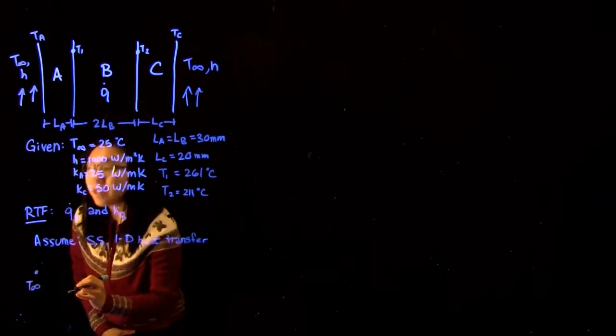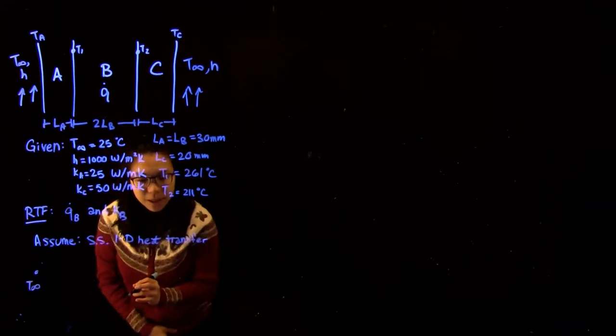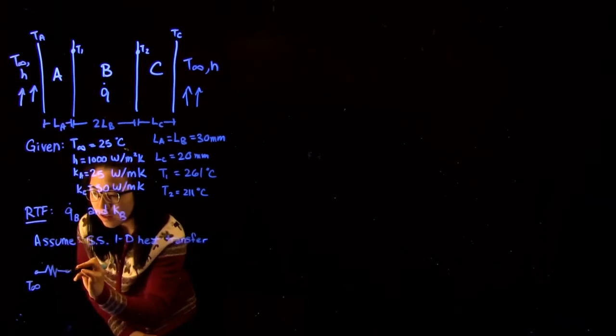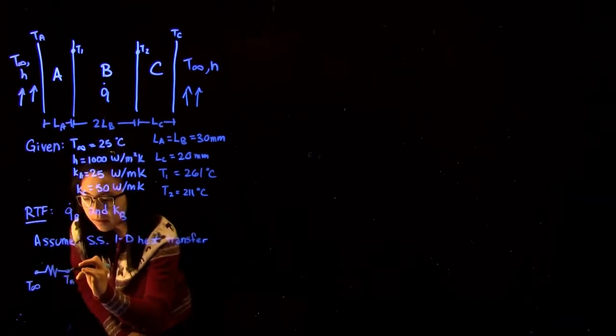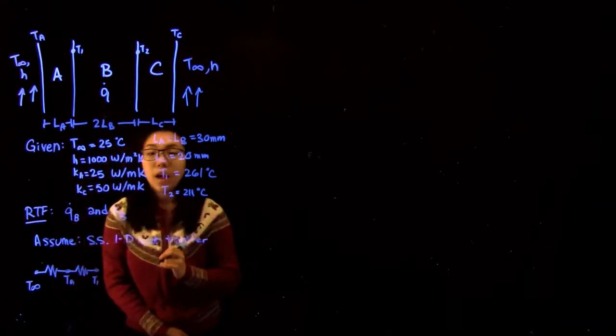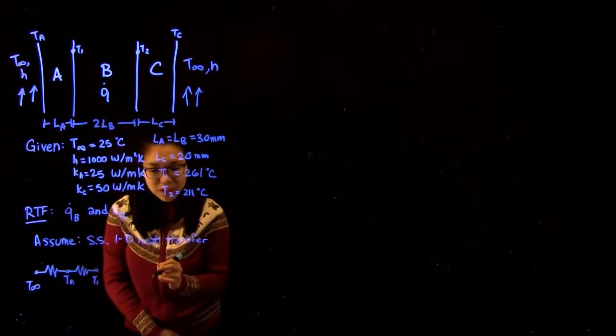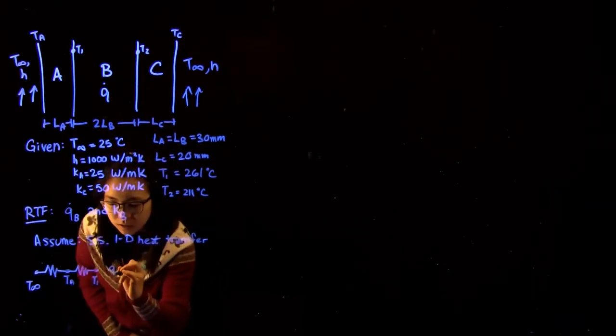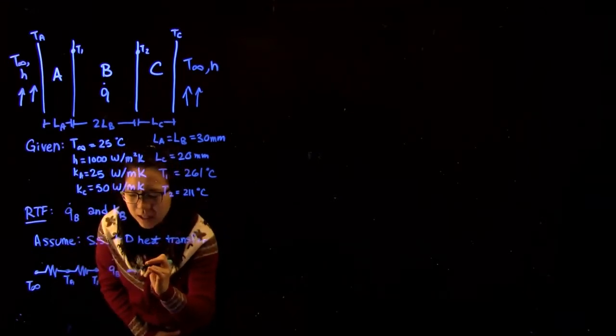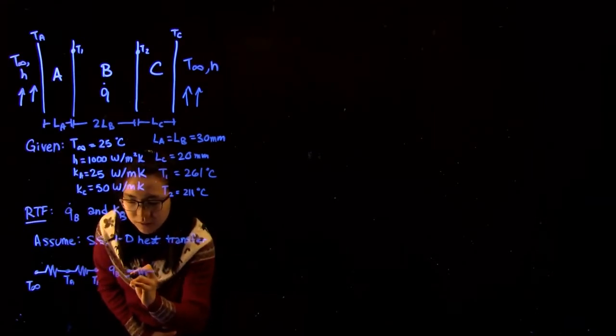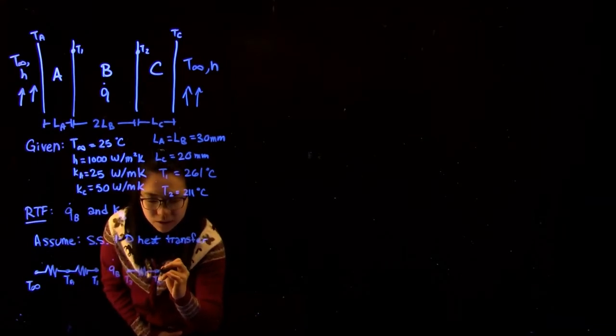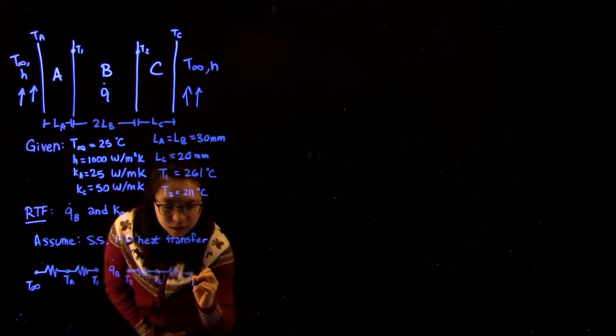We can start at T infinity which is just the fluid where convection is happening and that has a certain resistance. Then we reach wall A and eventually reach T1 which is given in this problem. Because we have heat generation occurring in the middle there's a break in the circuit and then on the right we have basically a parallel or symmetric circuit. So we have T2 here, at the end of the wall we have temperature Tc and we reach T infinity.